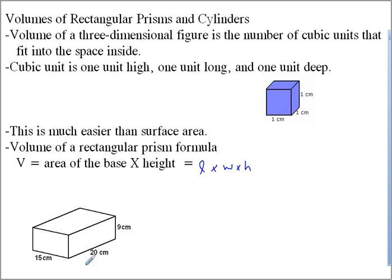So 15 times 20, and then we multiply that by 9. Well, what's 15 times 20? That's going to be 15 times 20. It should be 300 times 9. It's going to be 2,700.